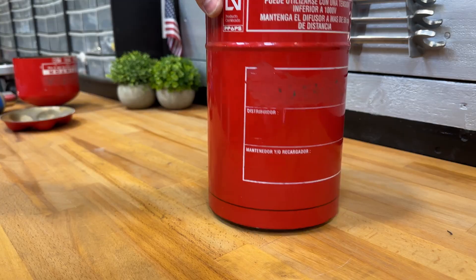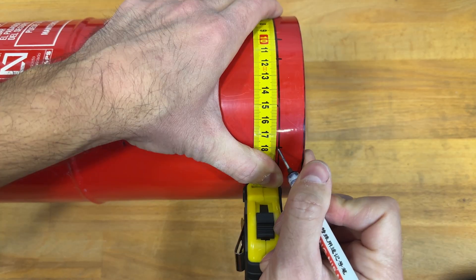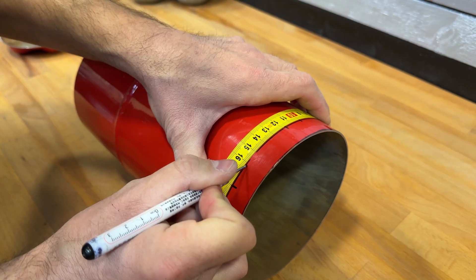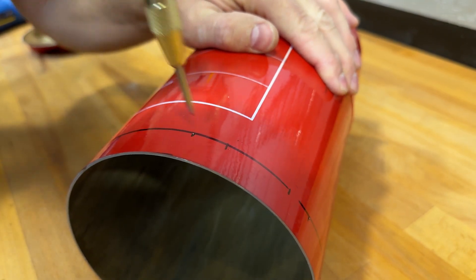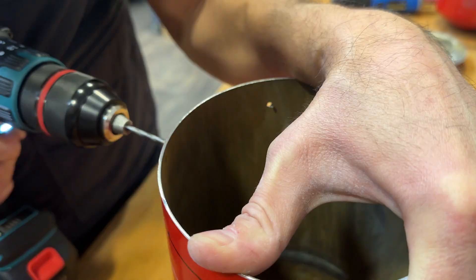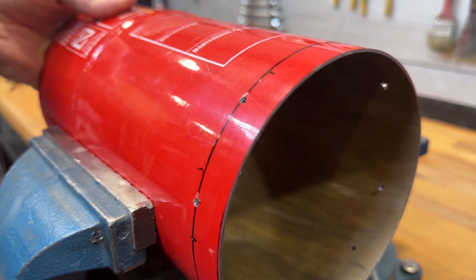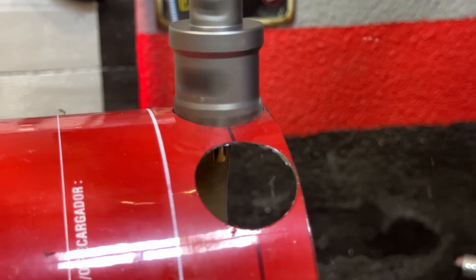Now we trace this new line and mark the points where we'll make large holes. We mark the centers of the holes with the center punch. First we make a small hole. Now we'll hold it securely in the vise so we can drill with this 35mm diameter hole saw.